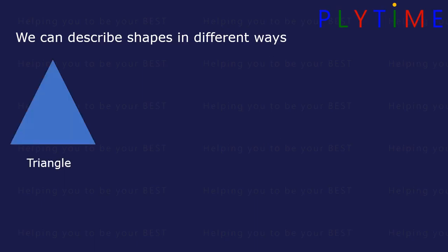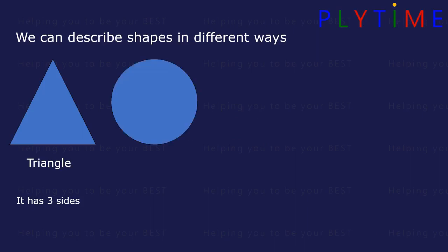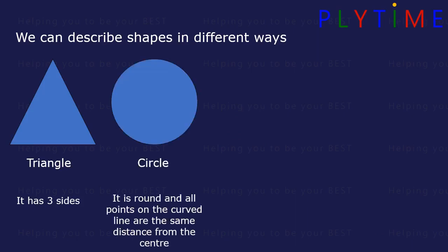This is a triangle. It has three sides. This is a circle. It's round and all the points on the curved line are the same distance from the centre.